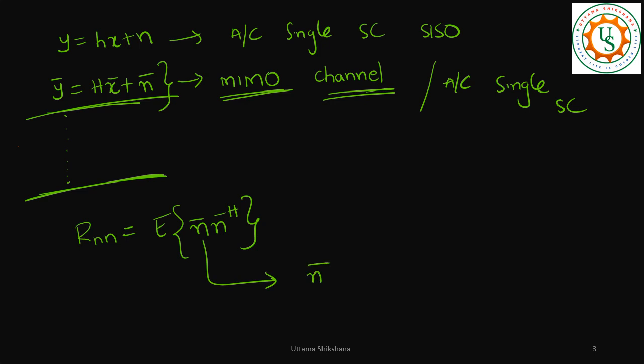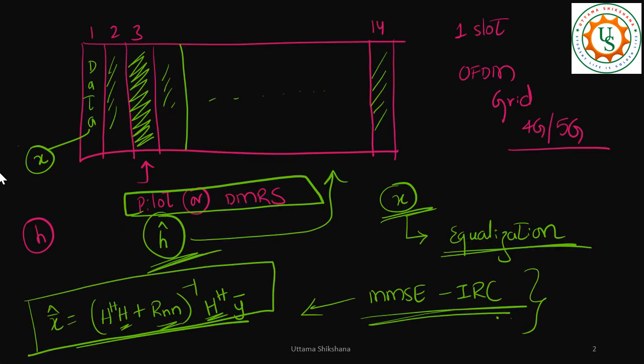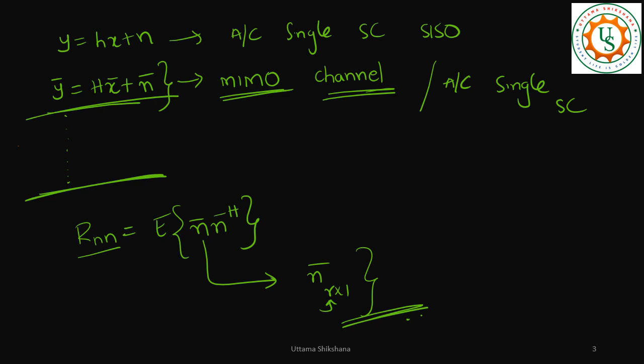That is expectation of n_bar n_bar hermitian. This n_bar is r cross 1, this is number of receive antenna into 1, so this is nothing but noise. We have to perform the noise estimation and that is required for performing equalization or MMSE IRC equalization. Since we are talking about MMSE IRC, this is interference rejection combining equalization. It is just not noise, it is the interference plus noise.